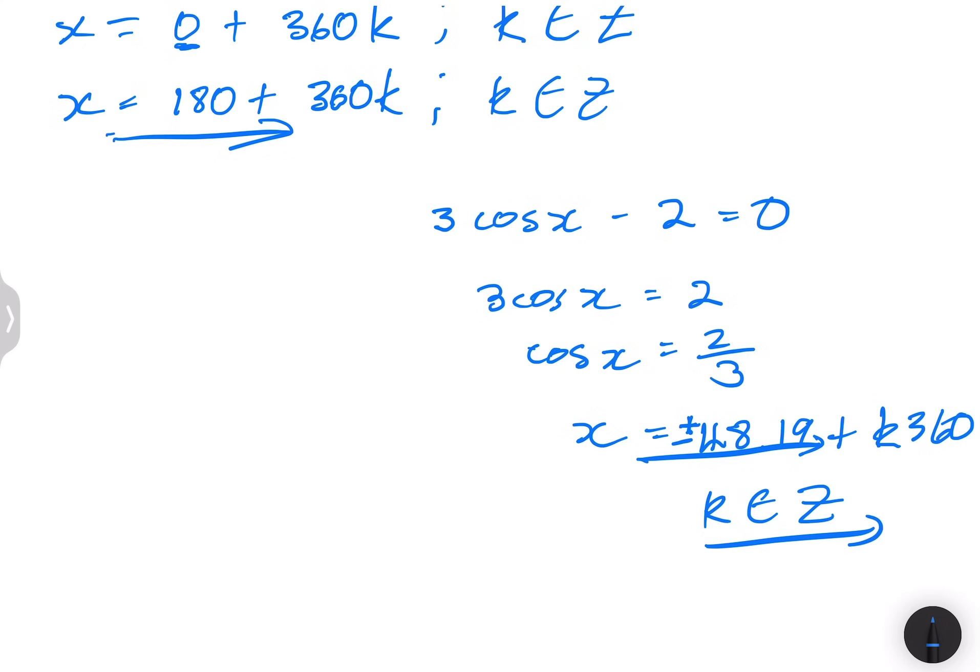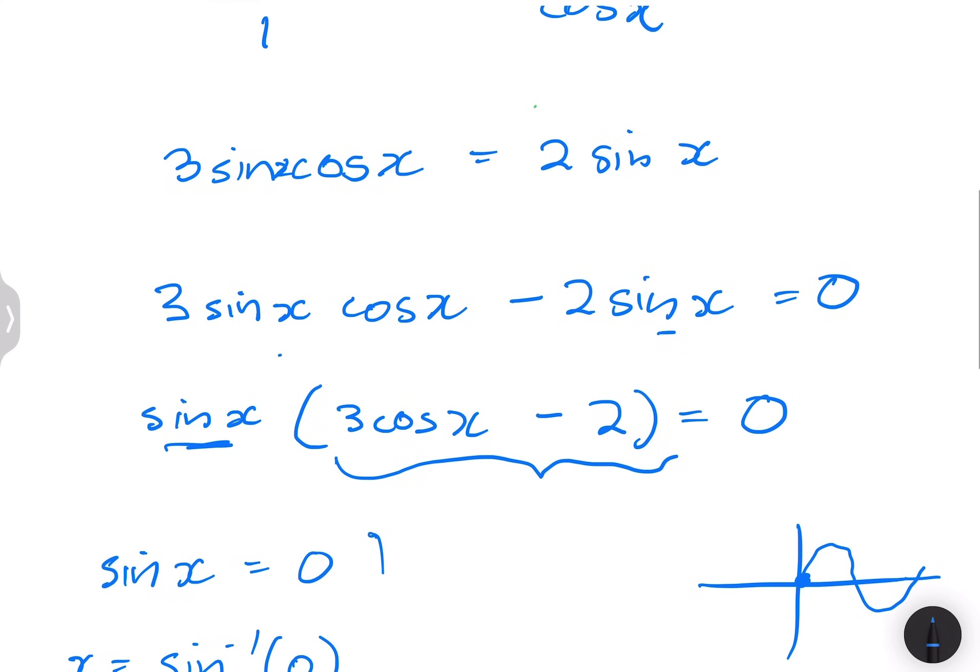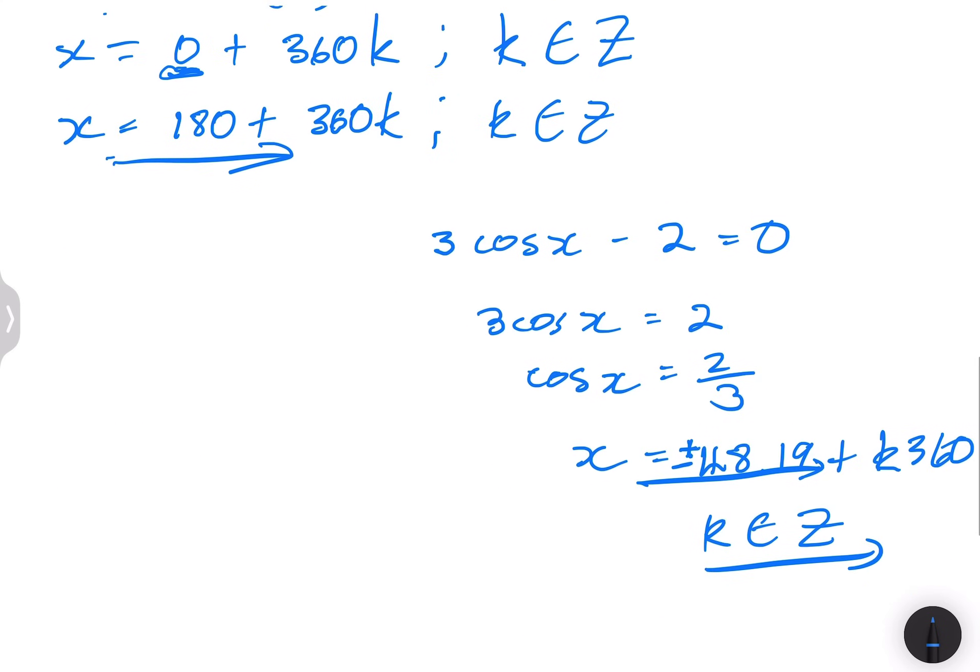So those are the two solutions that we had. We had 180 plus 360 K, and we also have zero there. But we also have plus minus 48. I hope that makes sense, ladies and gents. So you take it slowly but surely. But ultimately, you get to the right answer. And we'll be continuing with the rest of our revision. Thank you. And I'll see you next time.